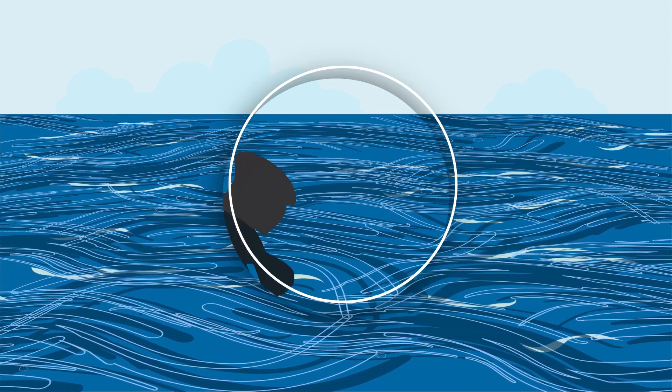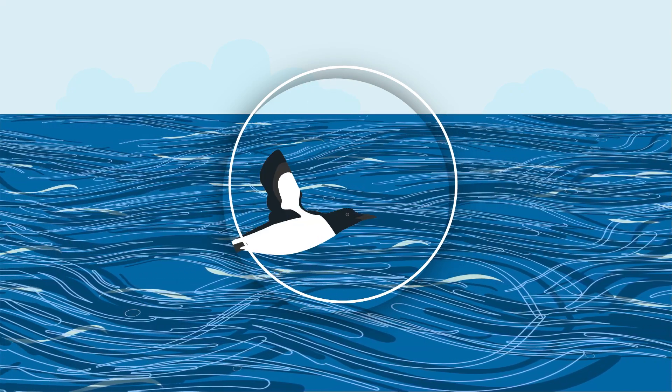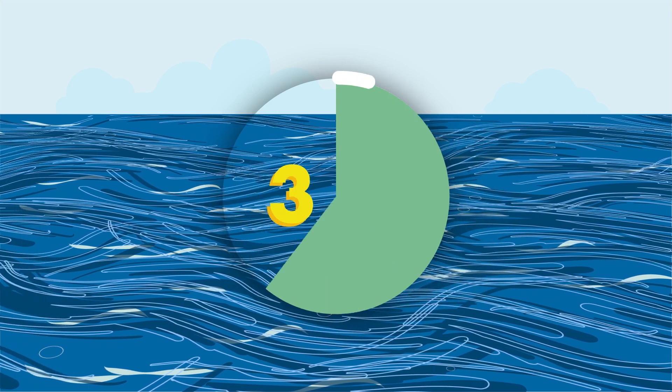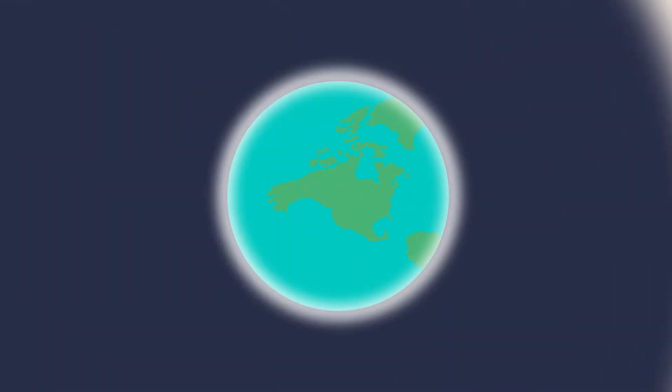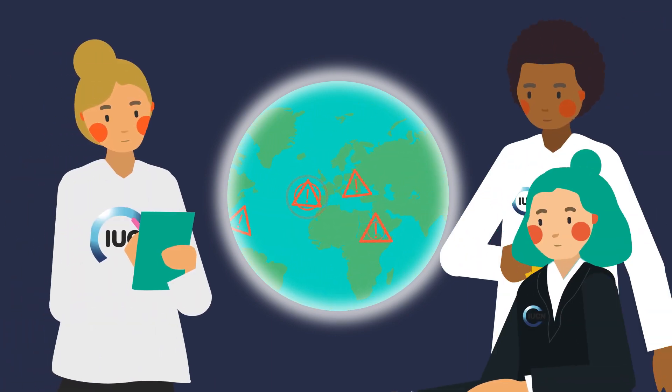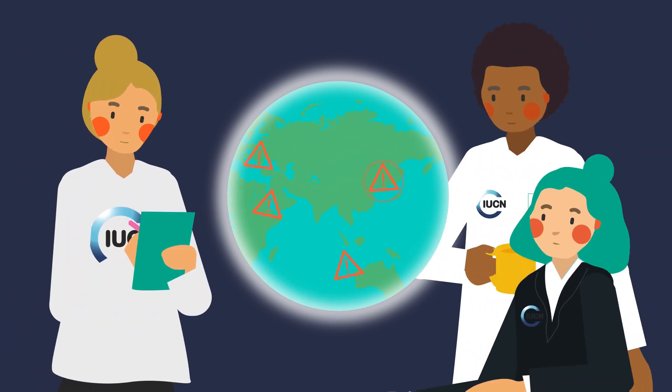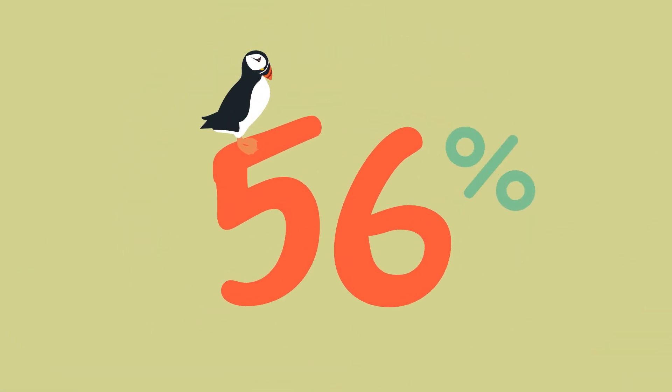Did you know seabirds are one of the most threatened groups of vertebrates in the world? Out of 362 species of seabird, 43% are listed as either globally threatened or near-threatened by the International Union for Conservation of Nature, and 56% of the species with a known trend are in decline.